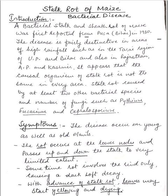With the advance of stock rot, leaves may start yellowing and drying. In this case, the disease is in an advanced stage.